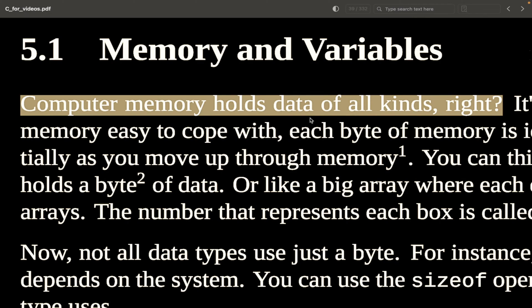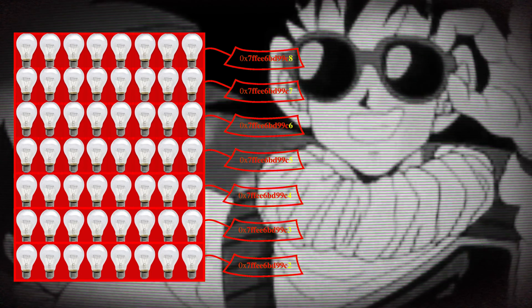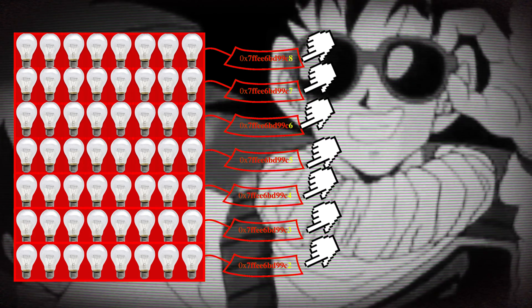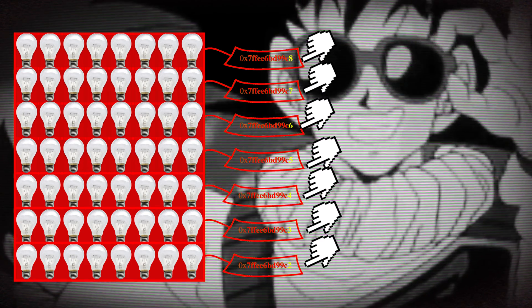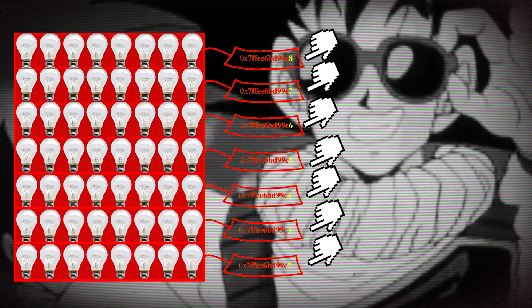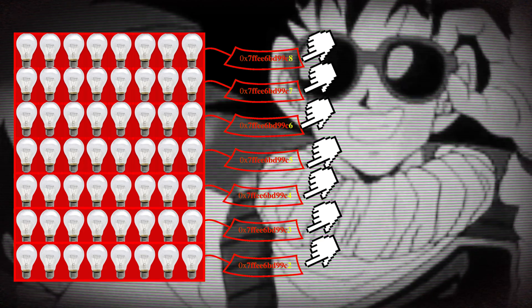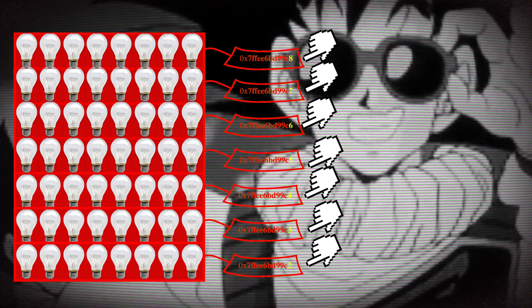Computer memory holds data of all kinds — floats, ints, or whatever. To make memory easy to cope with, each byte of memory is identified by an integer. These integers increase sequentially as you move up through memory. You can think of it as a bunch of numbered boxes where each box holds a byte of data, or like a big array where each element holds a byte. The number that represents each box is called its address.